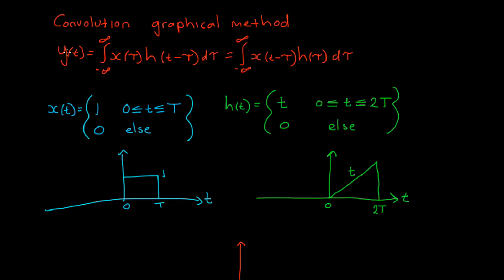So the formula, if you're not familiar, is y(t) — which is your final convolved function — and that's going to be the convolution of x(τ) with h(t − τ), or you can do it the other way with x(t − τ) and h(τ), and it doesn't really matter. But it's going to be important when we come down here, because you want to work with the easiest function to work with.